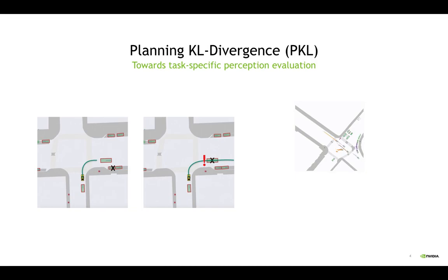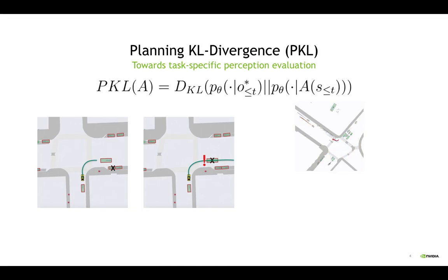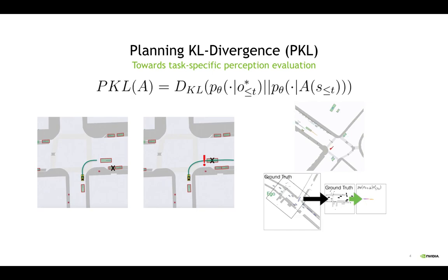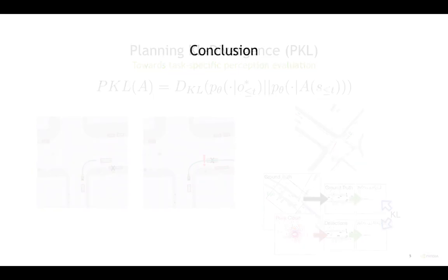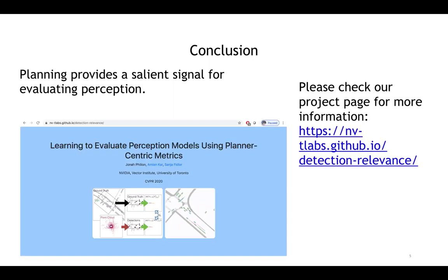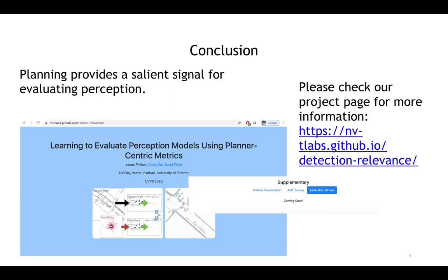To quantify that difference, we first train a model that outputs a distribution over future trajectories given detections. We then measure how different detections are from ground truth by measuring a statistical distance between the trajectory distribution conditioned on real observations versus the trajectory distribution conditioned on detections. PKL is a practical way to extract a salient measure of perception performance directly from planning.